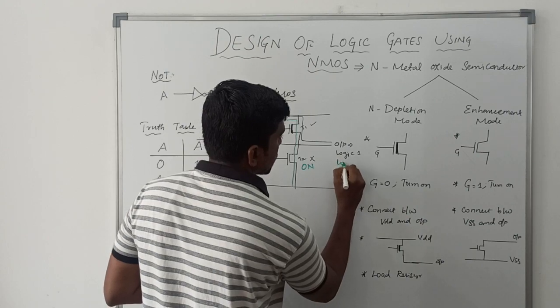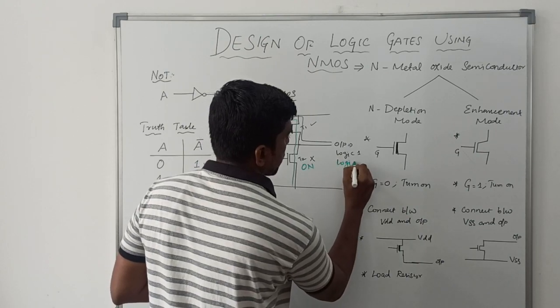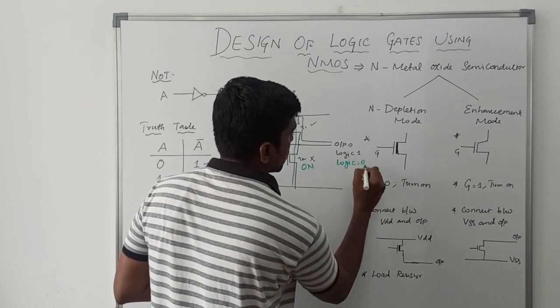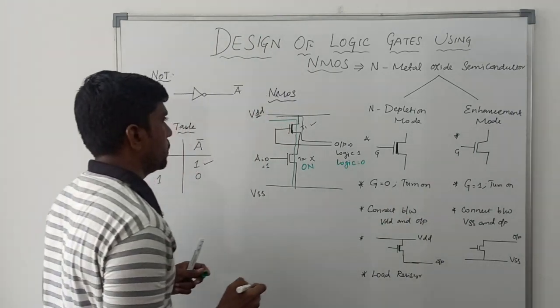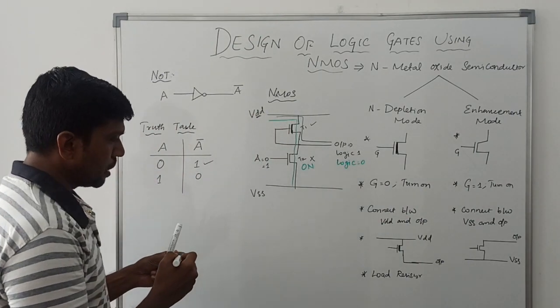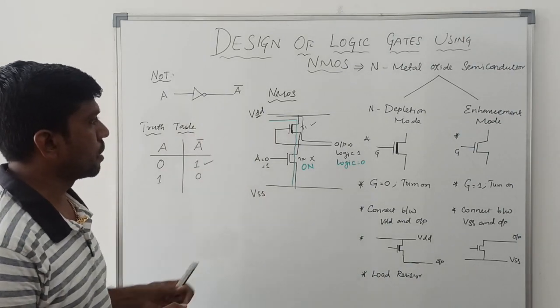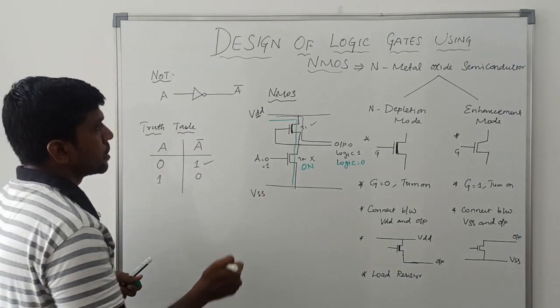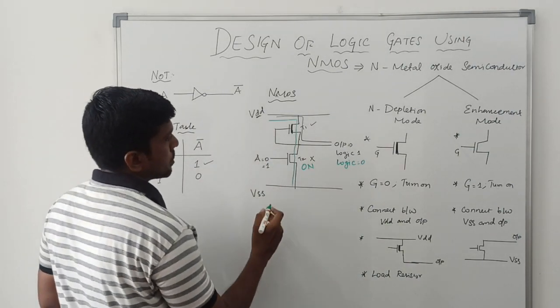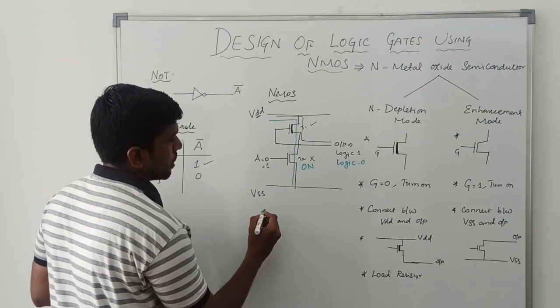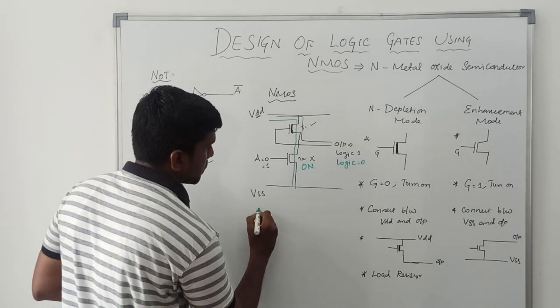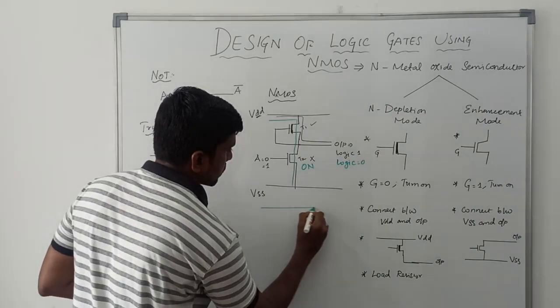When input A is 1, T2 turns on and the output is connected to VSS through T1 and T2, so the result is logic 0. This is the basic operation of the NOT gate, and the NMOS logic circuit implements it correctly.